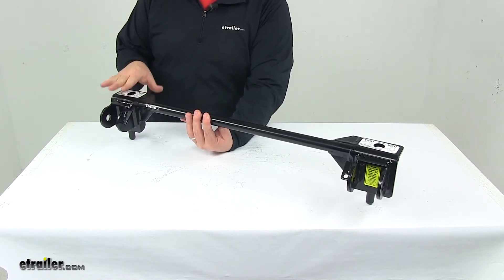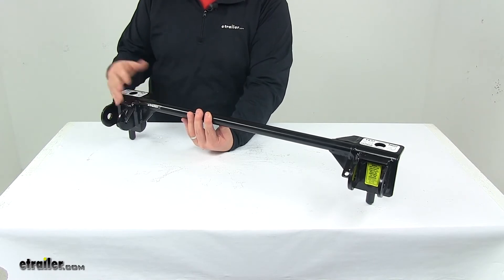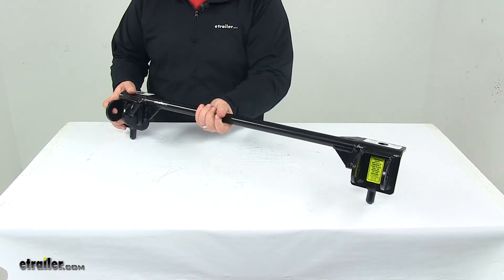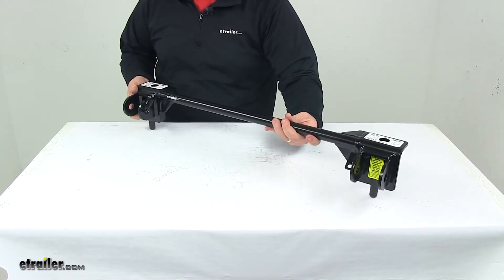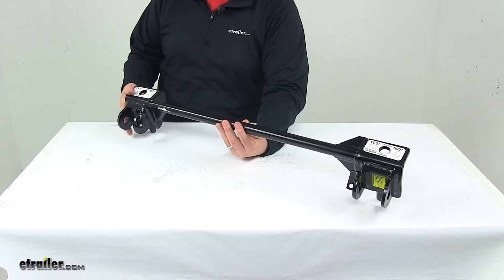With this part number you get one crossbar. It's a durable steel construction with a black powder coated finish to resist rust and corrosion and look good for a long time.